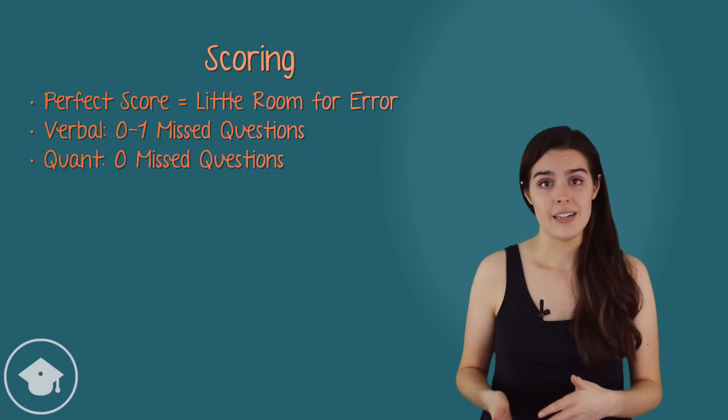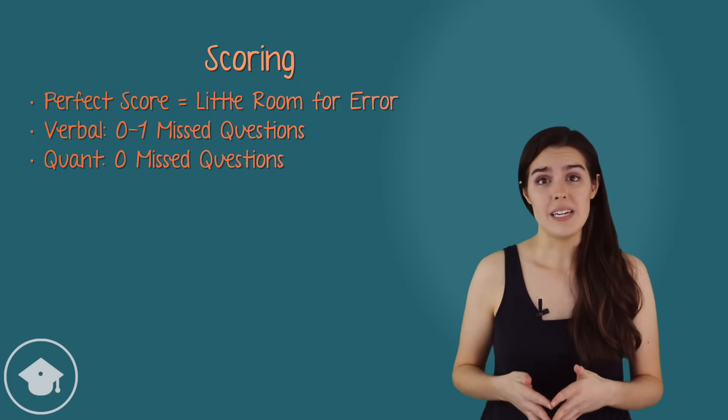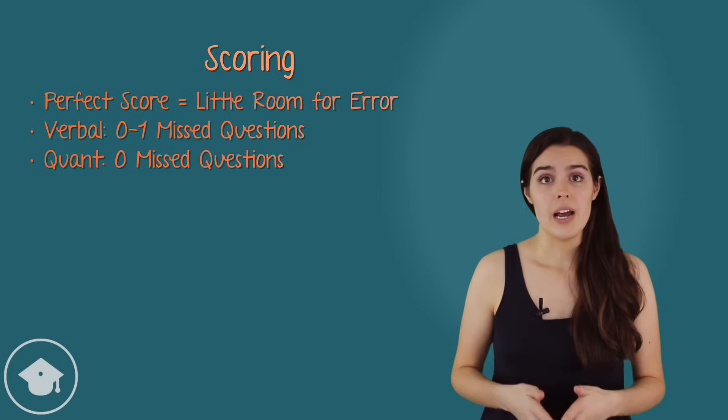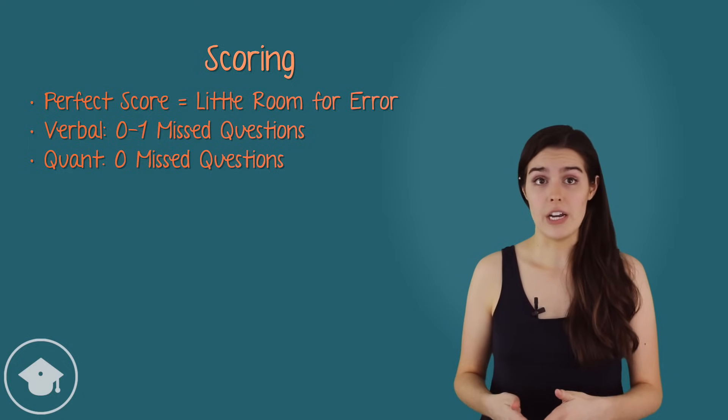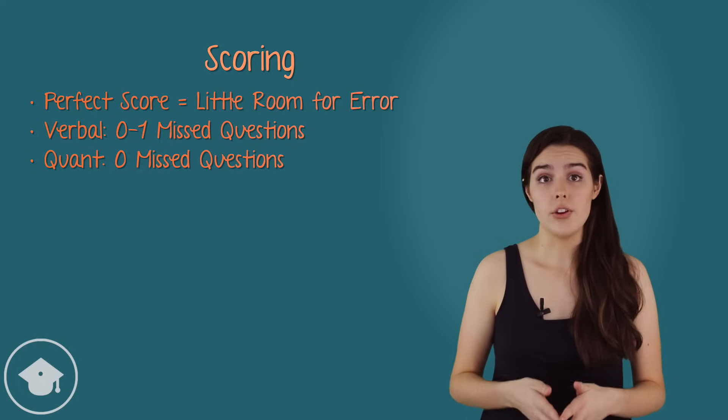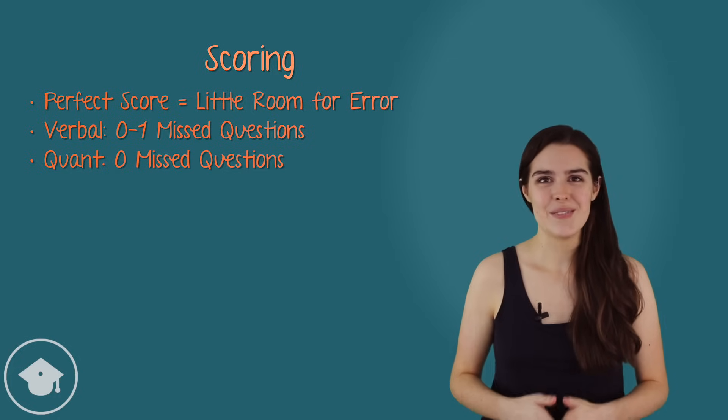Now, for quant, I got a 169. That indicates that I must have missed one question somewhere on the two scored quant sections. However, for both verbal and quant, I must have scored high enough on the first section to move on to the hard second section. I also got a third experimental quant section, which I do not think went very well. More on that to come.